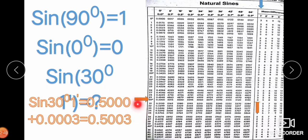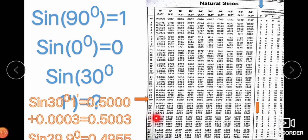To find the sine of any angle in degrees and minutes, locate the degree in the left extreme row and read the corresponding minute column for the total value. For example, sine 29.9° will be less than 0.5. See the row of 29° — the 9 minutes column in the log table gives 0.4955. So sine 29.9° = 0.4955.